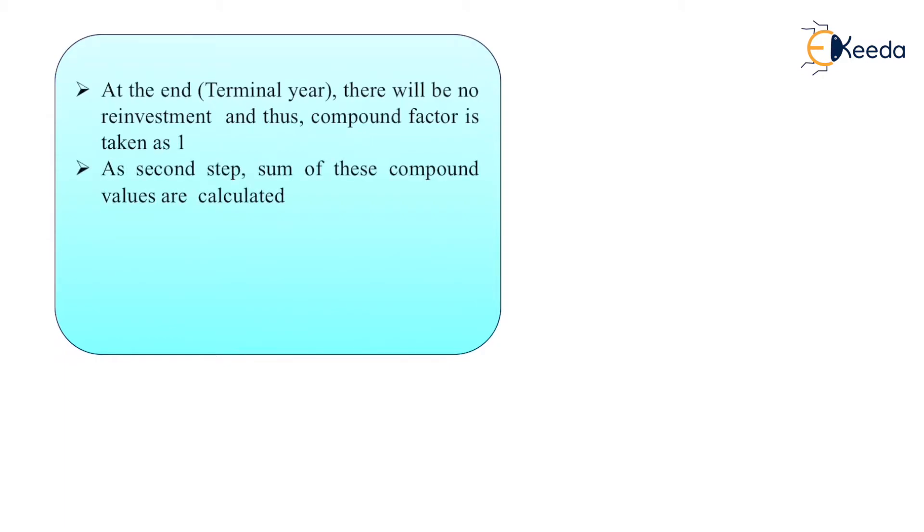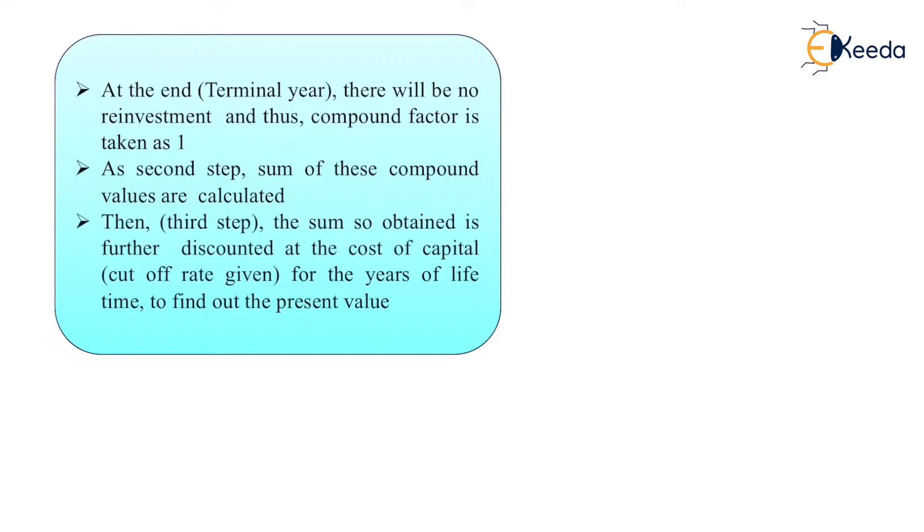In the second step, sum of these compound values are calculated. Then in next step, the sum so obtained is further discounted at the cost of capital for the year of lifetime to find the present value.